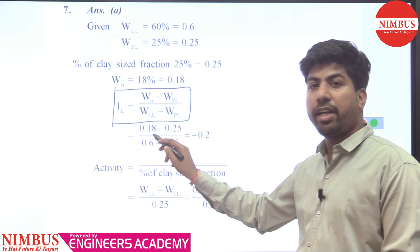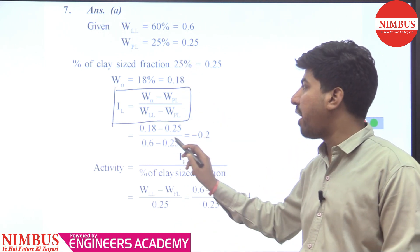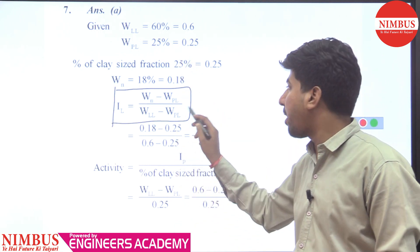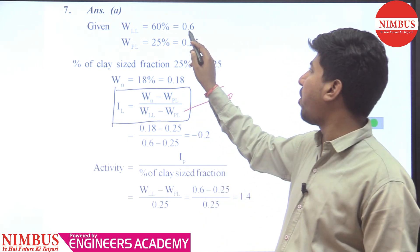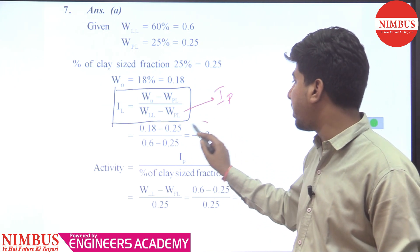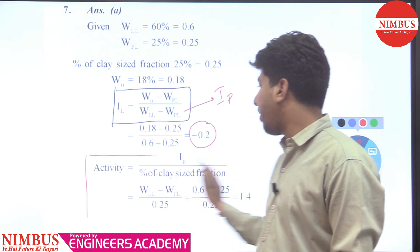W is 18%, 0.18 minus plastic limit 25. This is plastic index IP: liquid minus plastic, 0.60 minus 0.25. So from here the answer is minus 0.2.